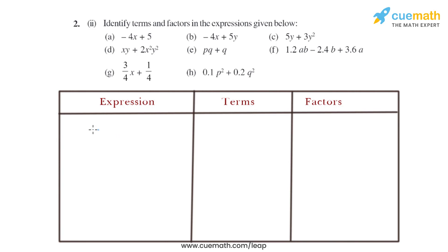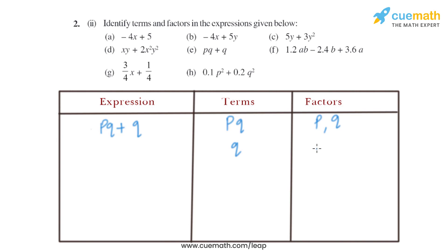Now let's move on to part E. The expression given is PQ plus Q. The terms are PQ and Q. The factors of PQ will be P and Q, as both can divide PQ completely without leaving any remainder. Similarly, the factor of Q will be Q only.